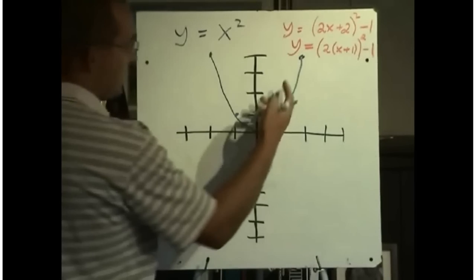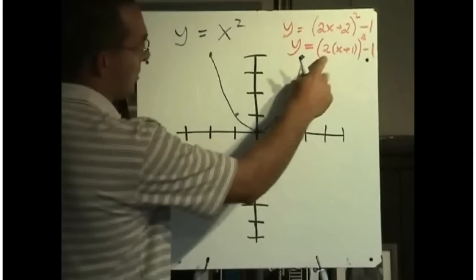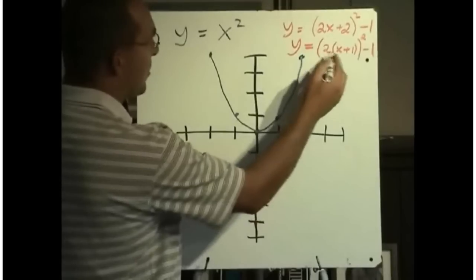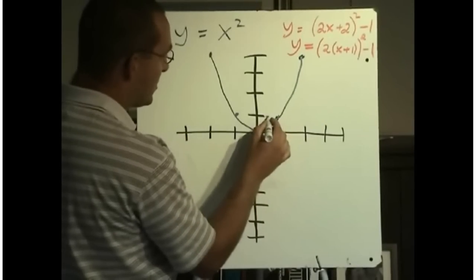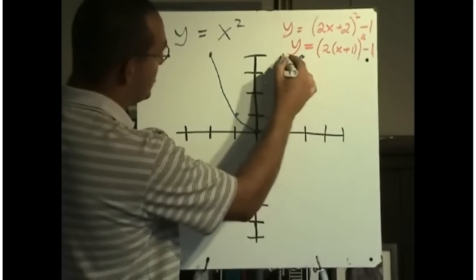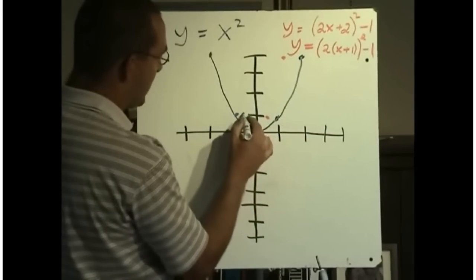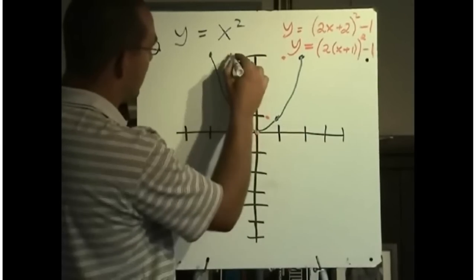So when we're doing these transformations, there's a lot of different things here. You might want to do this one first, horizontally compress it by a factor of a half. So when we're horizontally compressed by a factor of a half, all our x values are half of what they used to be. This x value was 1, it's now a half. This x value was 2, it's now 1. Half of 0 is still 0. Half of negative 1 is negative 1 half. Half of negative 2 is negative 1.